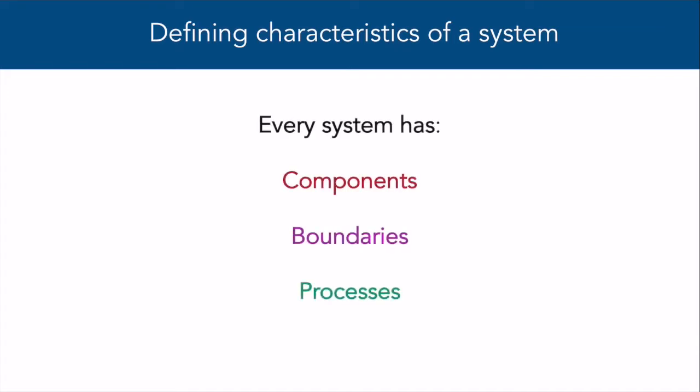Now that we've settled on the definition for systems thinking, let's dive into the different pieces that make up every system. In every system, there are going to be three primary parts: components, boundaries, and processes. We're going to learn about each of these in turn while using our water system as an example.